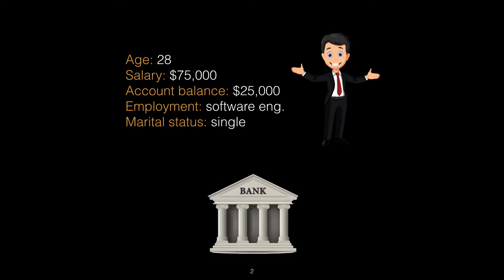This is Edward. He's 28, has a salary of $75,000, has $25,000 saved in the bank, is a software engineer and is single. He's thinking of buying a house. After months of scrupulous savings and many open house viewings, he's finally found his dream home and is ready to place an offer. But first, he must visit a bank.